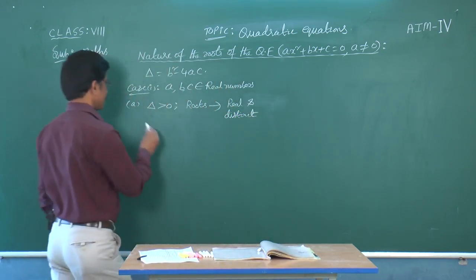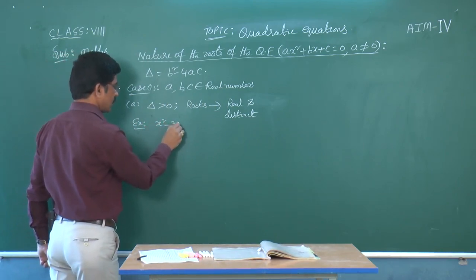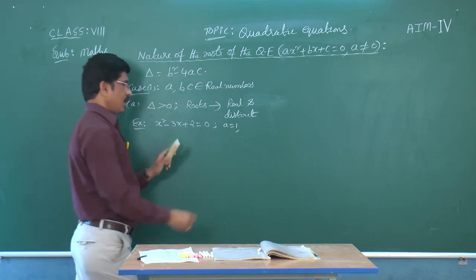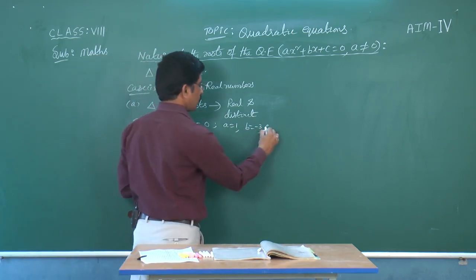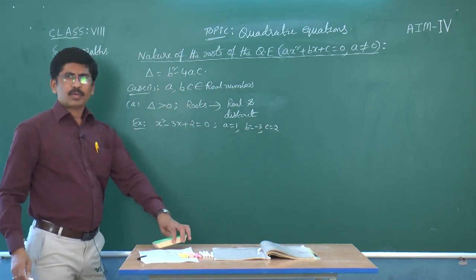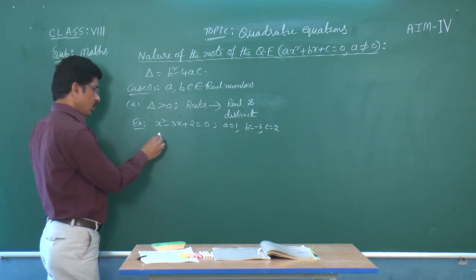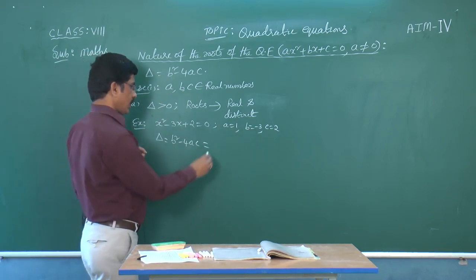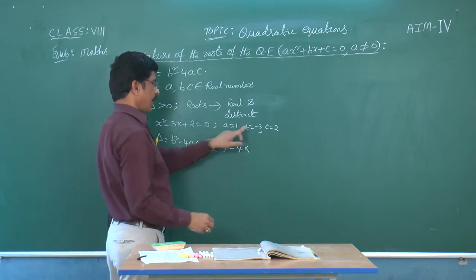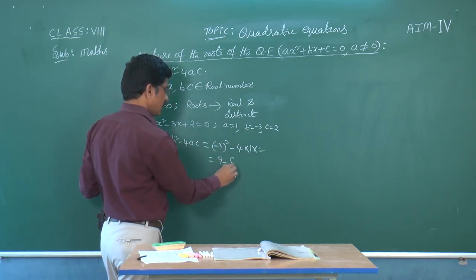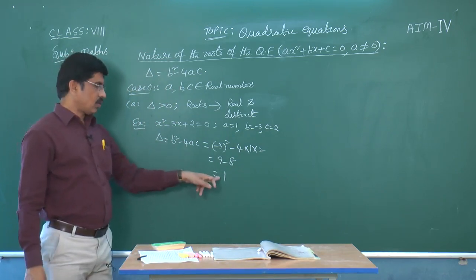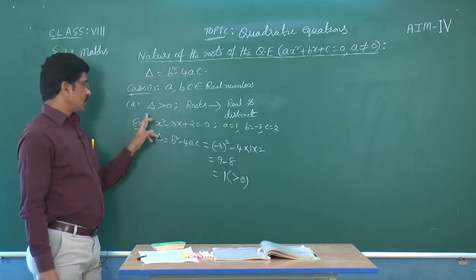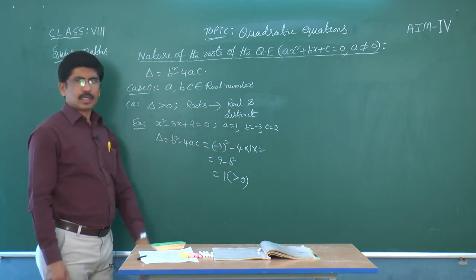Taking one example: x squared minus 3x plus 2 equals 0. Here A equals 1, B equals minus 3, C equals 2. Delta equals B squared minus 4AC equals minus 3 whole squared minus 4 into 1 into 2, equals 9 minus 8, equals 1. The delta value is 1, which is greater than 0. So the roots are real and distinct.